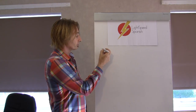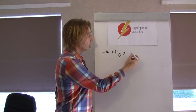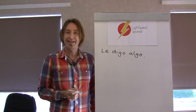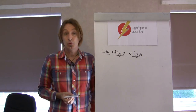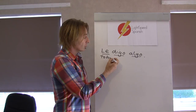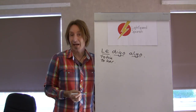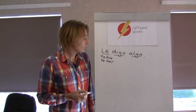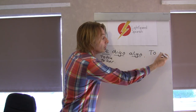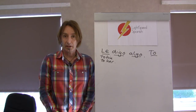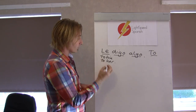Let me show you, starting with the basic one. 'Le digo algo' — I say something to him. So the 'le' means 'to him,' and obviously it could also be 'to her.' So 'le digo algo' — that's one way the pronoun can work, meaning 'to.' That's one preposition we can see.